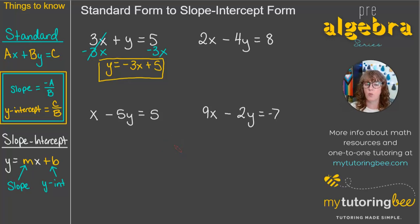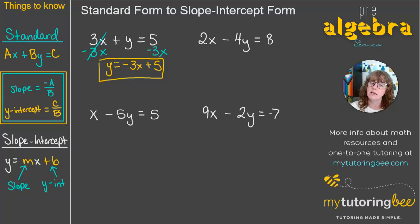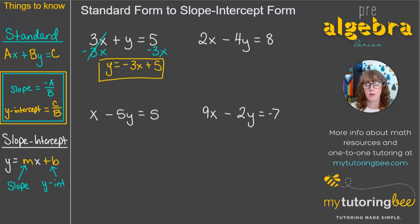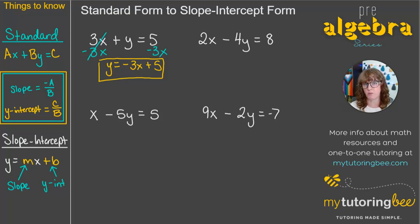There are a lot of reasons why you might want an equation in slope-intercept form — maybe you're trying to graph it. When we have it in slope-intercept form, it's easy to see what the slope and Y-intercept are. Standard form is great for finding X and Y intercepts, but a lot of students are asked to convert from standard form or point-slope form into slope-intercept form, so knowing how to convert is really important.